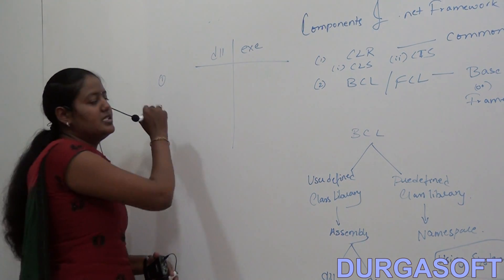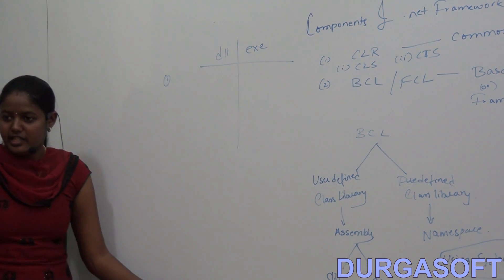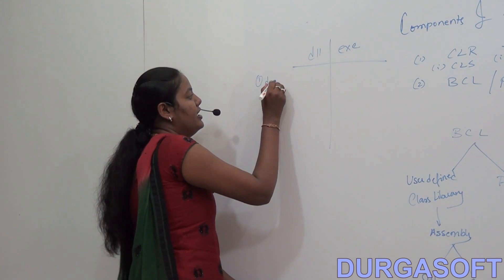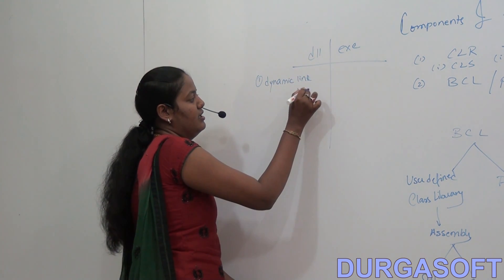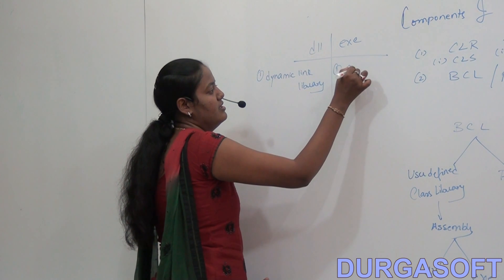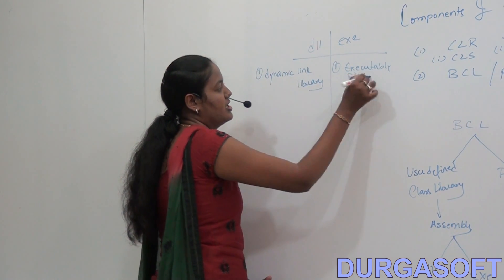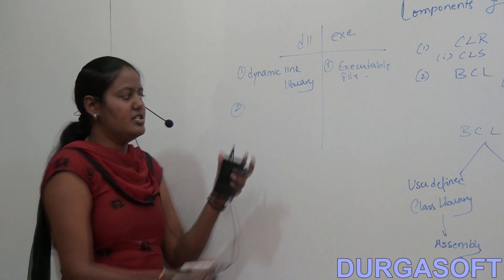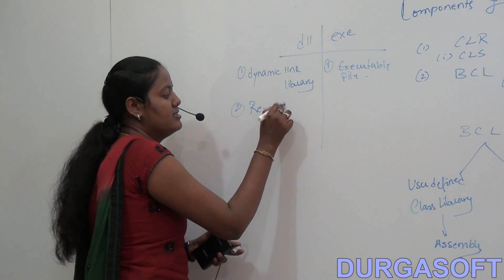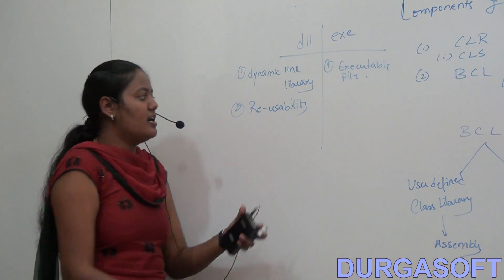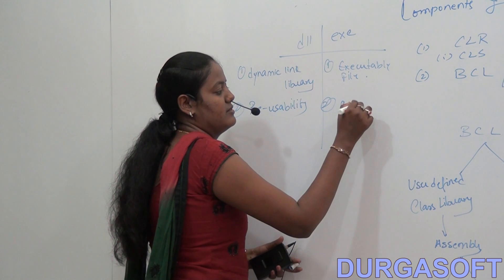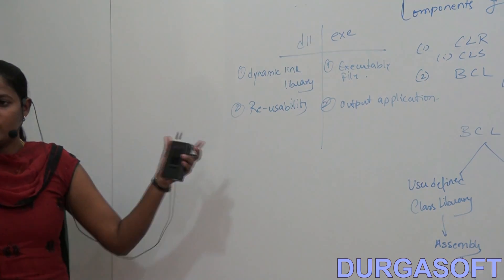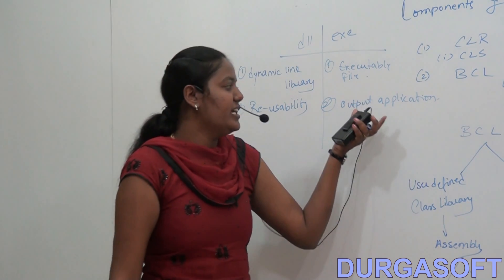DLL stands for Dynamic Link Library, and EXE is an executable file. The purpose of DLL is reusability — you can reuse a DLL in other applications. The EXE file is the output file, the output application.